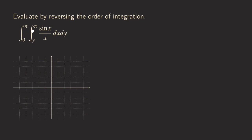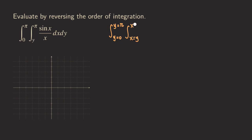First we are going to start by writing out the limits for the two integrals. We can rewrite the limits as: for the outer integral, those are the limits for y, so we write y equals 0 and y equals pi. For the inner integral we have the limits for x: x equals y and x equals pi.